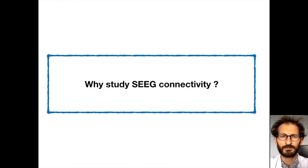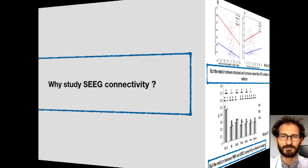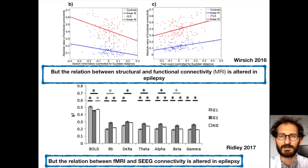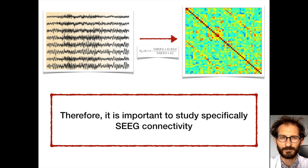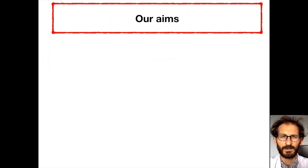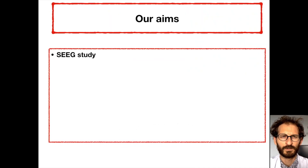So why particularly study the functional connectivity using SEEG? It is because the relation between structural and functional connectivity is altered in epilepsy. Moreover, the relation between fMRI and SEEG connectivity is also altered in epilepsy. So it is important to specifically focus on the SEEG-extracted functional connectivity.